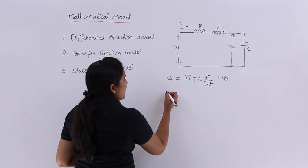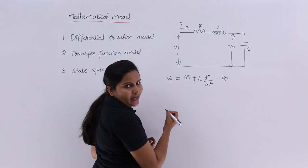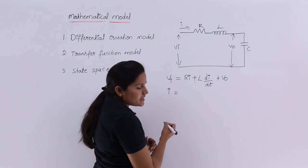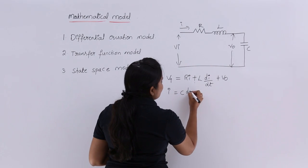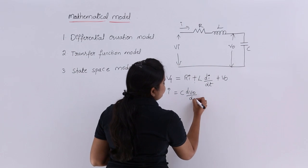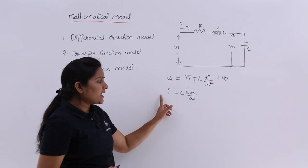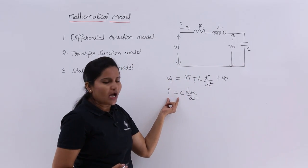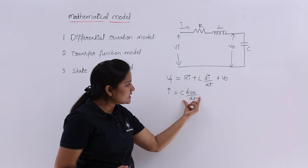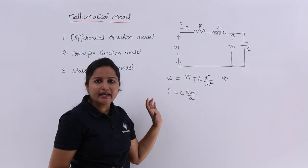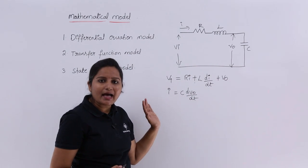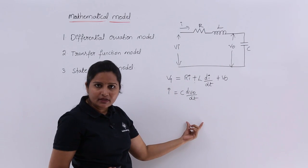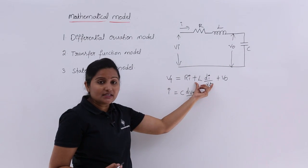Here I want to express the current I in terms of capacitance. The current passing through C is equivalent to I = C·(dV_naught/dt). I can substitute this expression for I into the main equation.